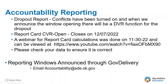Also from accountability, the dropout report — the conflicts piece of that has been turned on right now, and they're going to announce when the window is going to be open for the DVR function, so that is not available currently. You can just go in and view your conflicts. They also opened the report card CVR, and it's going to close on December the 7th. They provided a webinar yesterday — there were three different sessions on the report card calculations. If you weren't able to attend those webinars, I've provided the link on YouTube that you can go back and re-watch that information if you need to, and always be sure you check your data to ensure that it's correct.